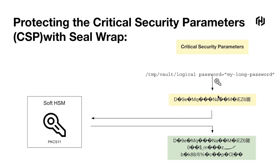We'll see how 'my long password' will look using vault encryption with seal wrap and without. By calling the path intended to be used without seal wrap, we're going to see the encrypted password using AES-256, and that string will be much shorter in comparison to what we'll see by involving seal wrap and our soft HSM to provide an additional layer of security. That additional layer of security means the same password will have a much longer encrypted string in return, making it harder to decrypt.